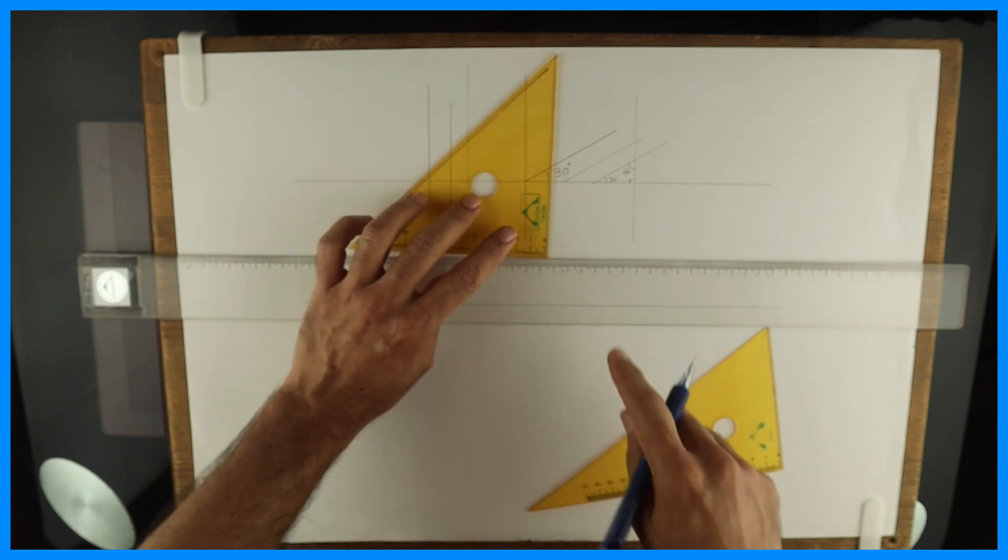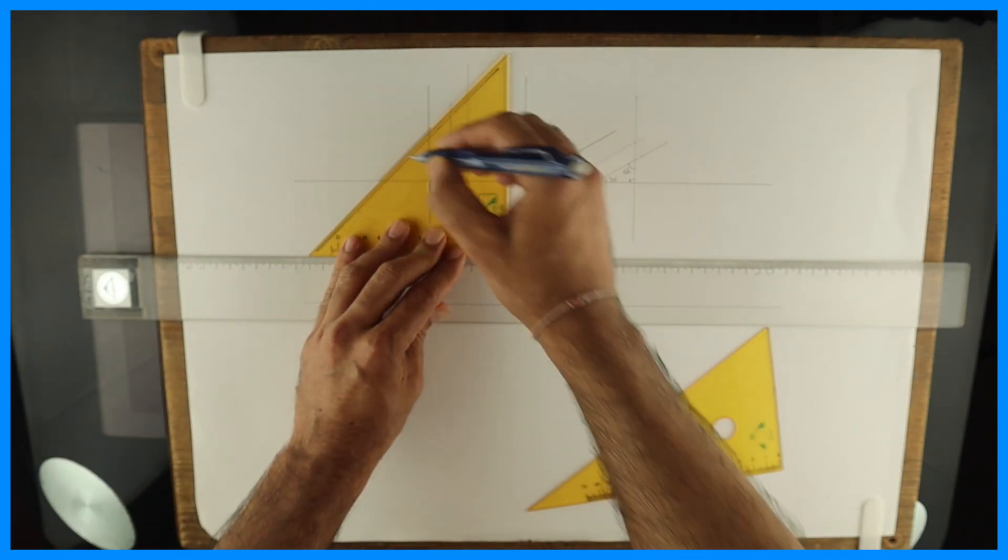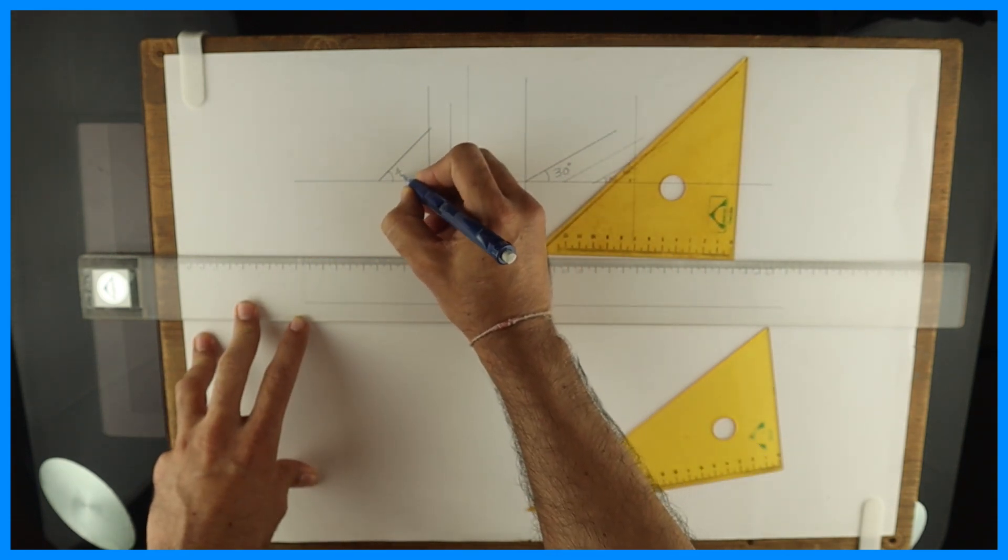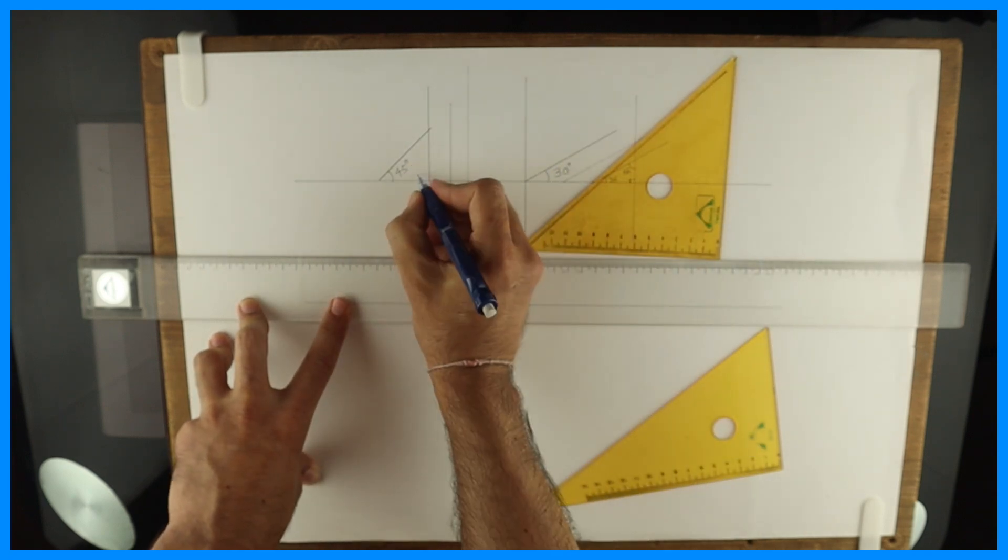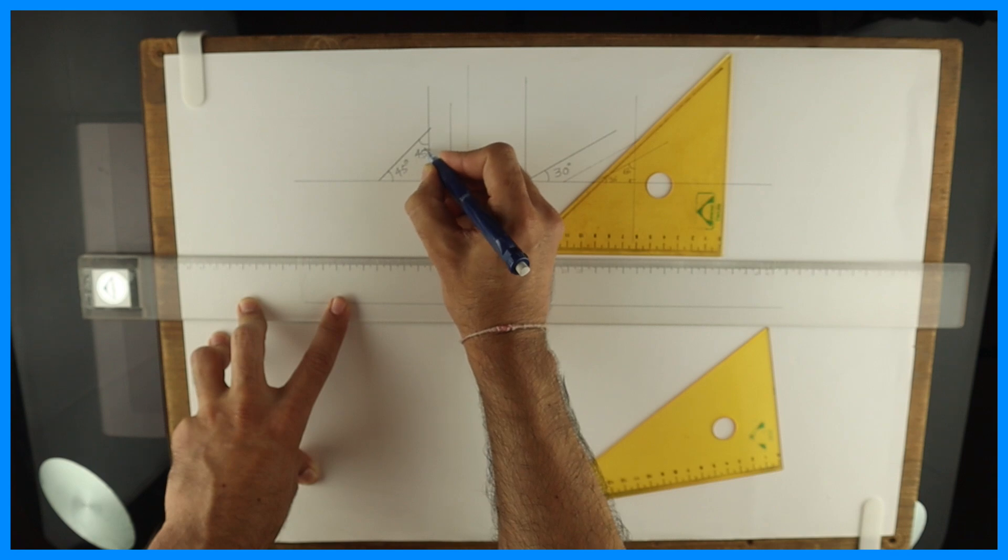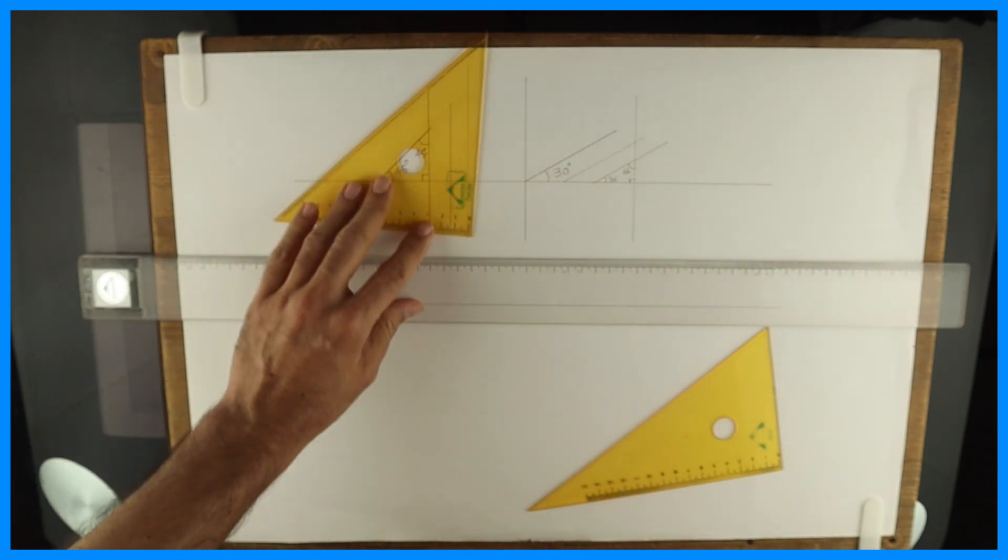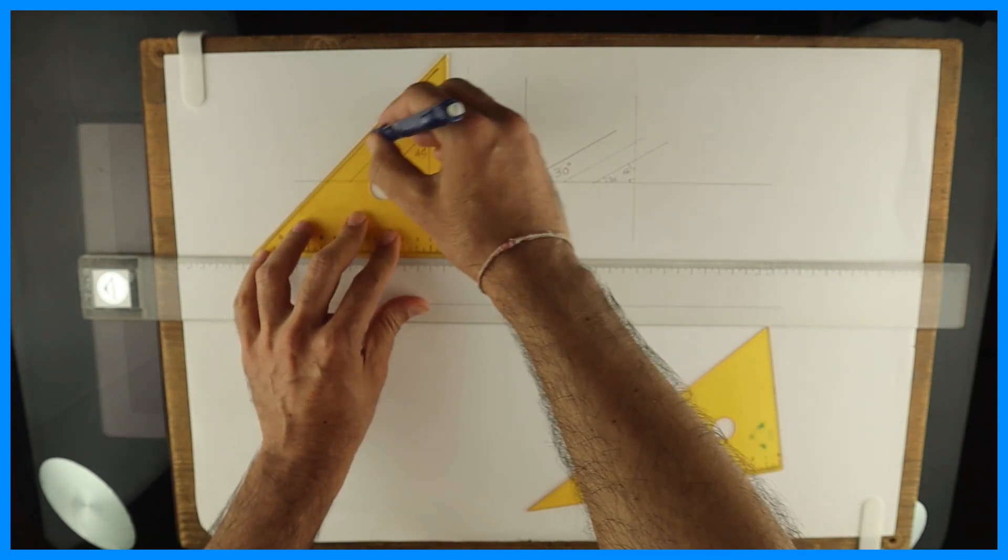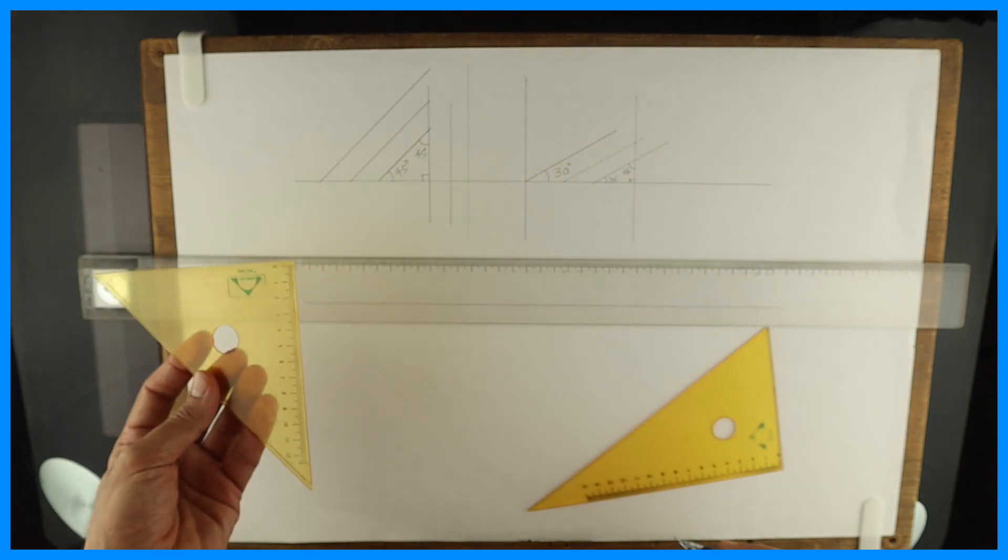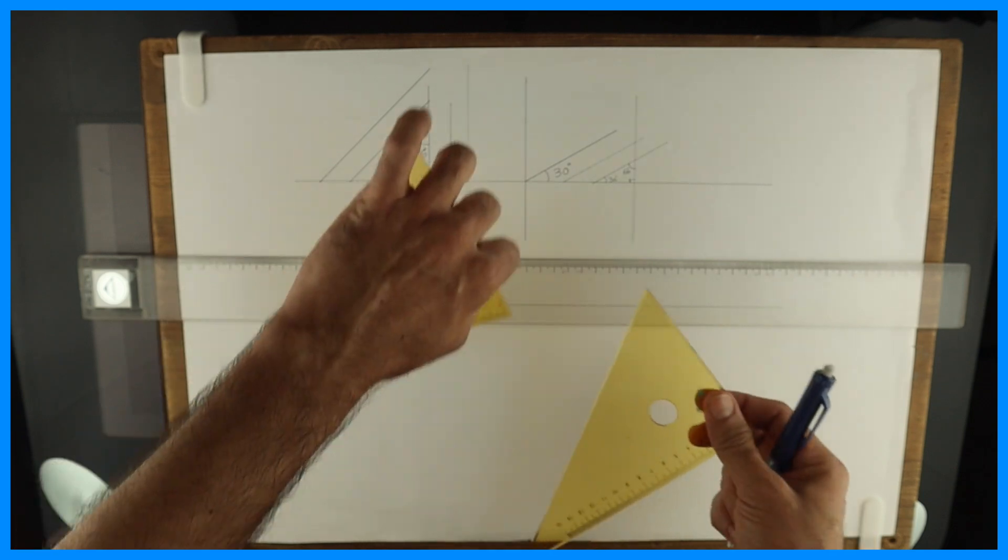Then we have 45 degree set square. See this. With this we can draw 45 degree lines. 90. So that's why it's called 45. See, with this we can draw n number of 45 degree lines. So generally we use these two set squares - 30-60 and 45-45.